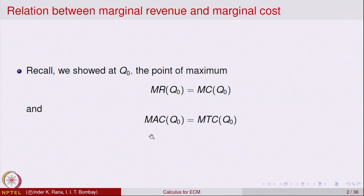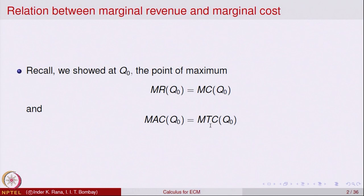We had started looking at some examples in an economics scenario — some models in economics — and we had derived a relation: at a point of maximum, if Q naught is a point of maximum, then the marginal of revenue at that point equals the marginal of cost at that Q0, and similarly the marginal of average cost equals the marginal of total cost. These two relations were developed using calculus tools in the previous lecture.